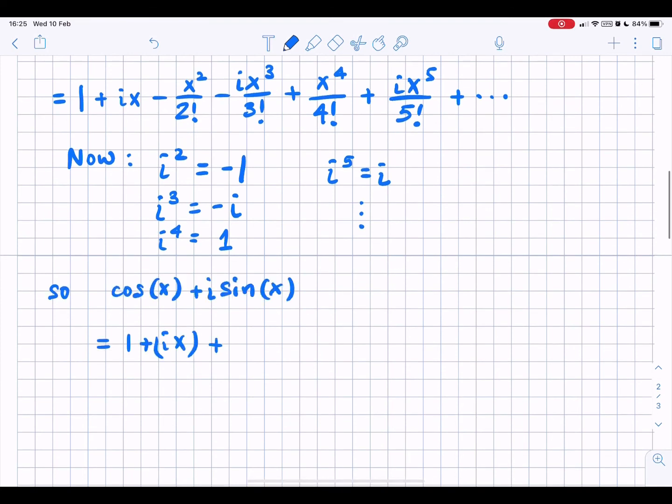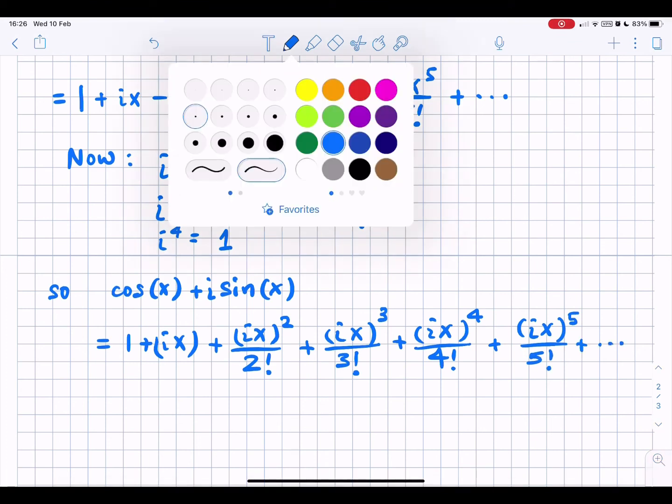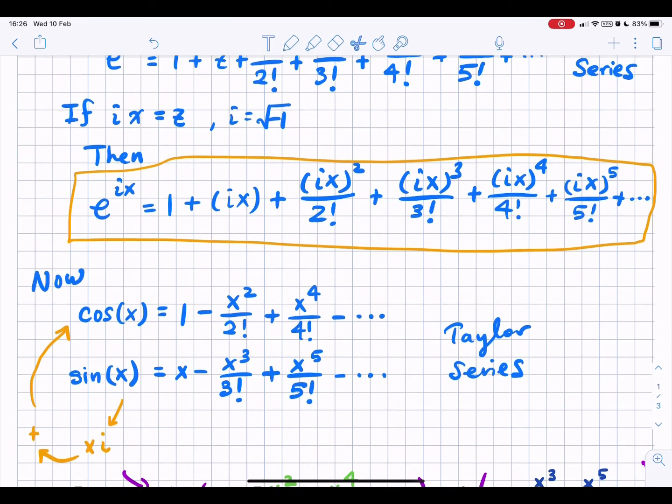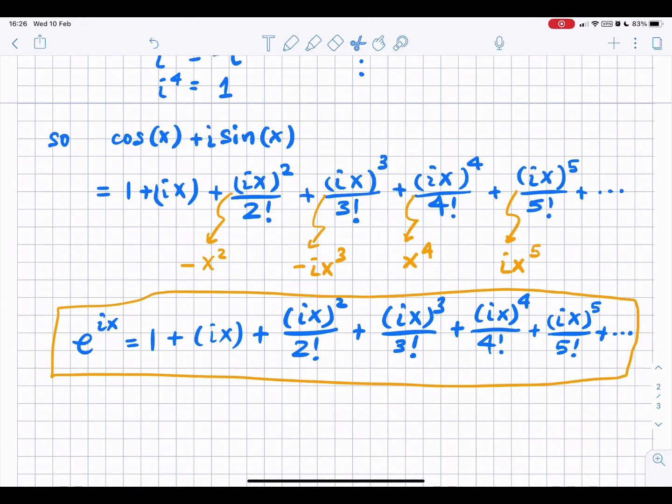And finally, we can write the expansion of the sum of cosine plus i sine. And we see that it is exactly equal to the expansion of e to the power of ix.